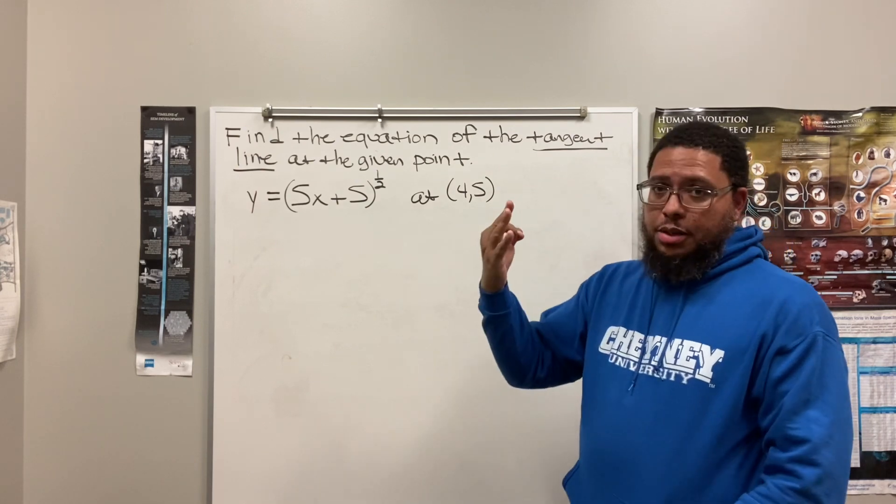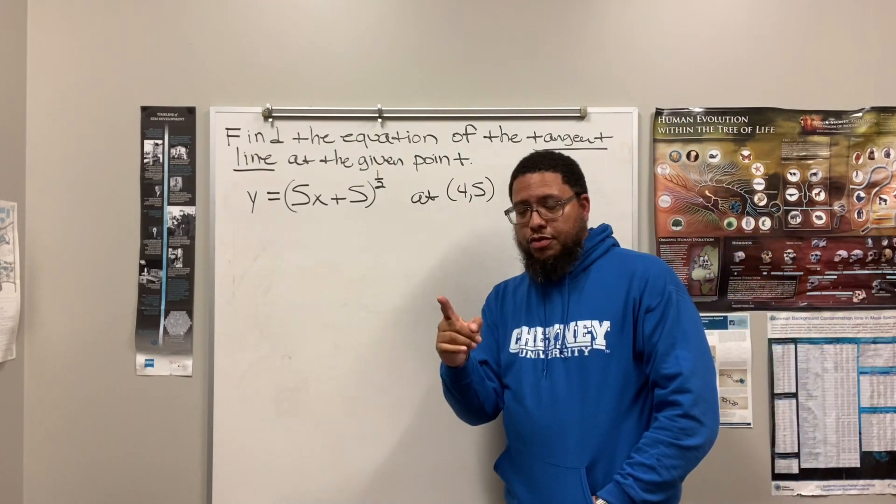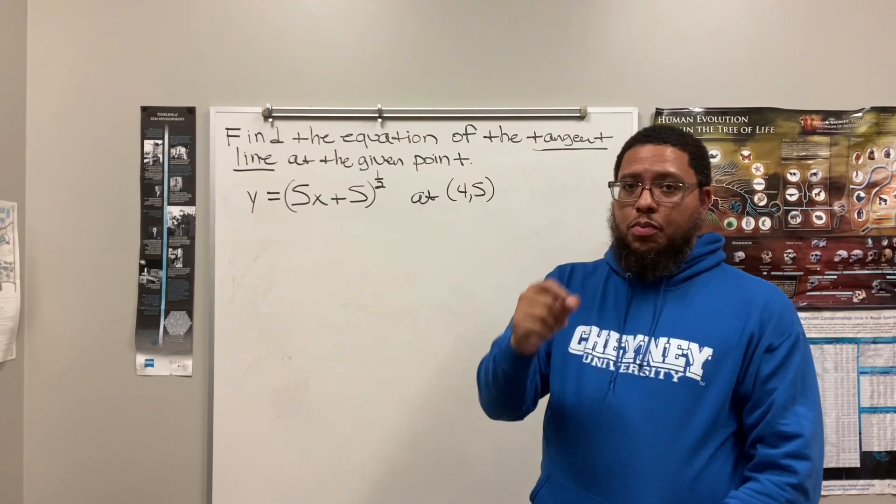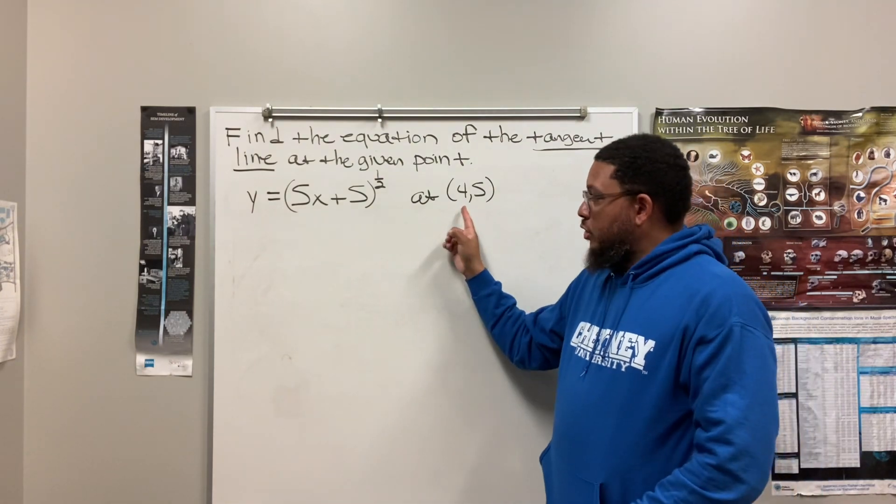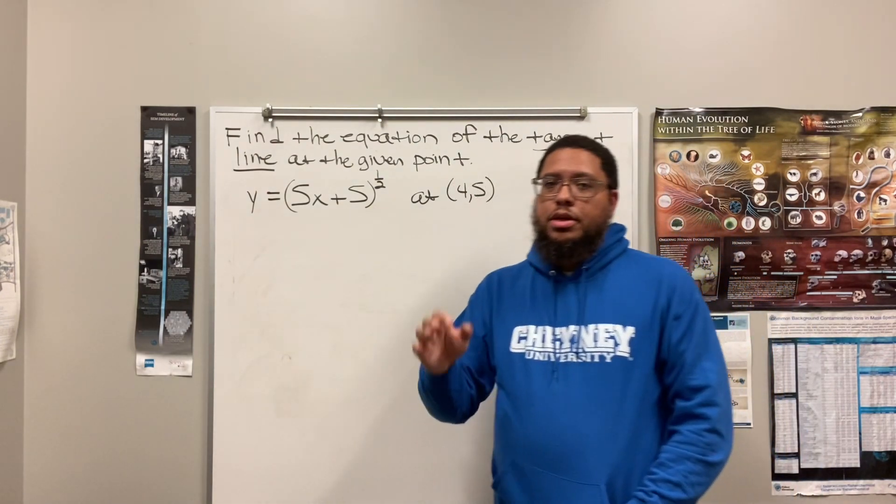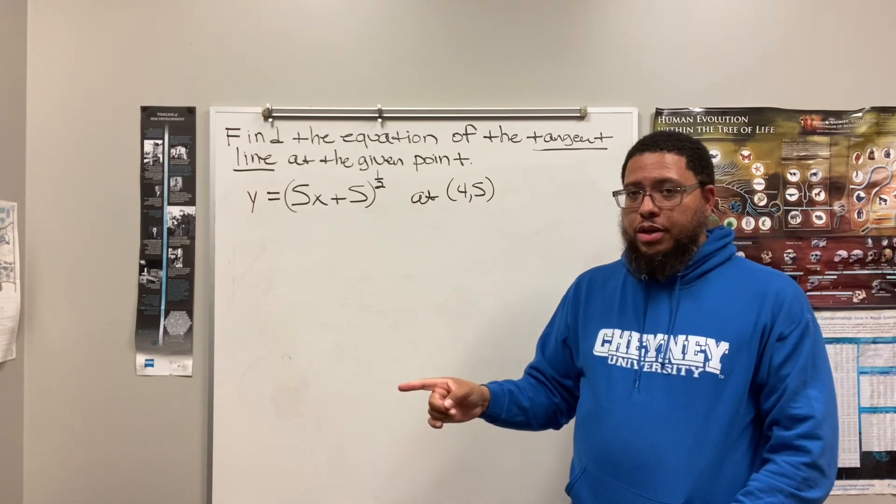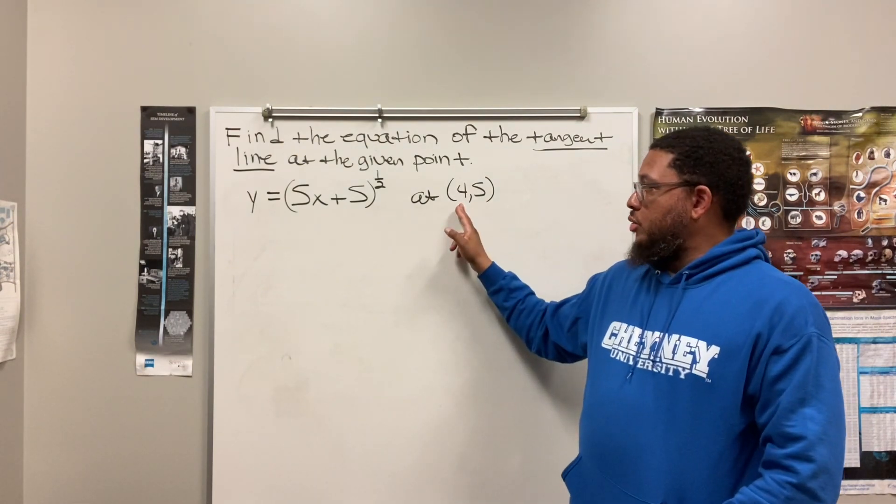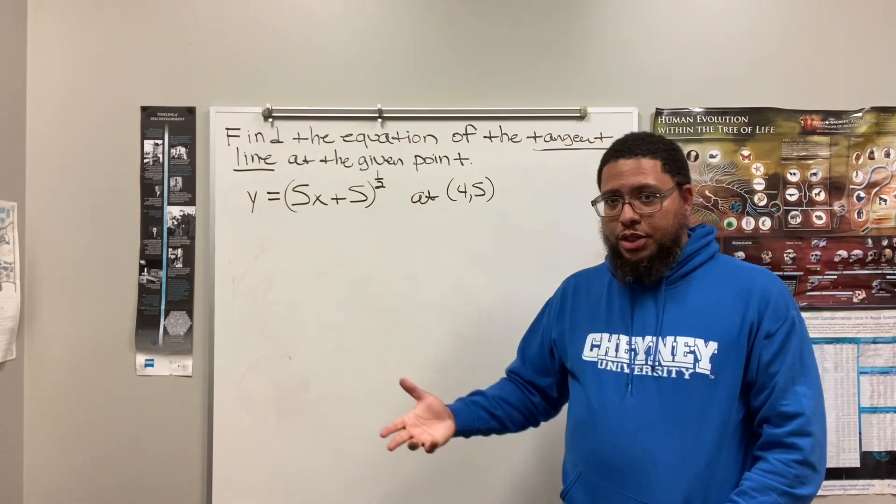All right, so we got three steps. First step, find the derivative. Second step, find the slope of the line by substituting this x value into the derivative. Third step, we take the slope that we just found and our x1 value and y1 value and find the equation of the line.